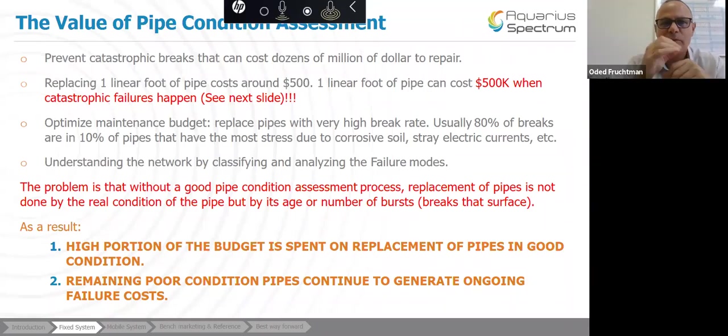Optimize. If you do that, it can optimize your maintenance budget and replace pipes with very high break rate. I mean, usually 80 percent of the breaks happen with 10 percent of the pipe due to stress, corrosive soil, electricity that can create pits, et cetera. It's important to understand the failure problems. As I mentioned before, some can come with pressure transient can break the pipe, recurring pressure transients in a specific location. Electricity can have speed up corrosion, soil, a lot of things can, so it's important to know the failure itself and analyze it because that way you can deal with the problem itself.